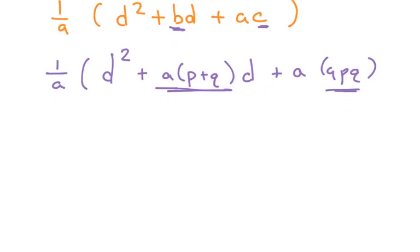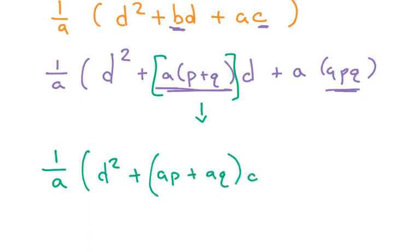Okay, now we have a giant mess, but we can play with this mess a little more further. We can take this middle part, and we can rewrite it as 1 over a, d squared, plus, if I distribute this out, I'll get ap, plus aq, times d, plus.